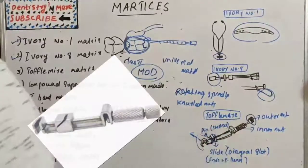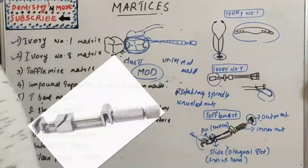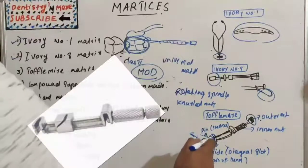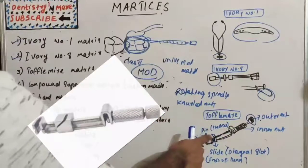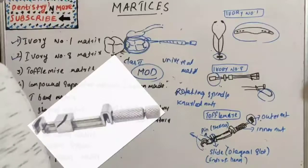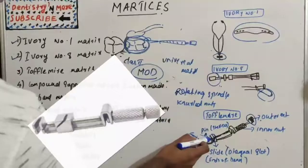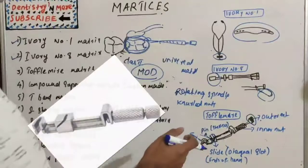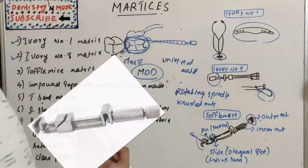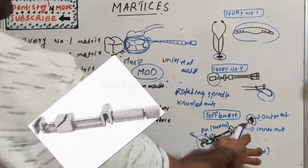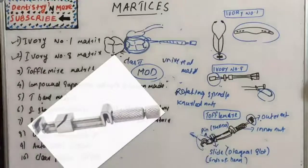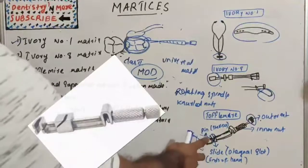The knurl nuts are also known as knobs — outer knob and inner knob. There are guide slots used to position the matrix band for either the left or right quadrant. There is also a spindle, also known as a pin — this internal screw-like pin fits into the diagonal slot to secure the ends of the matrix band. When assembling the retainer, the spindle point must be clear of the slot into which the band slides.